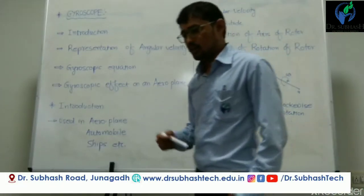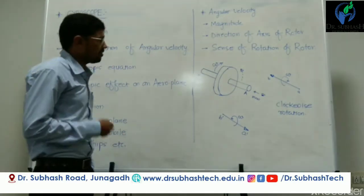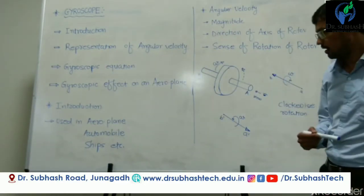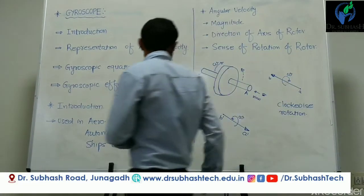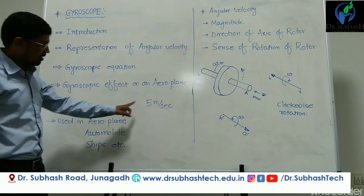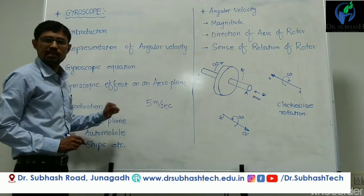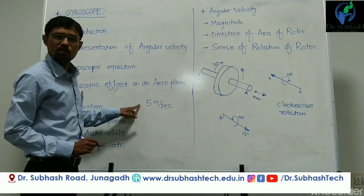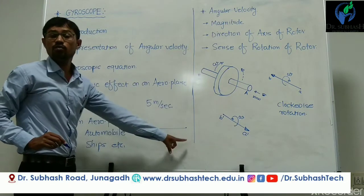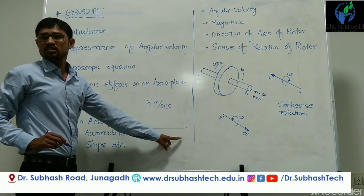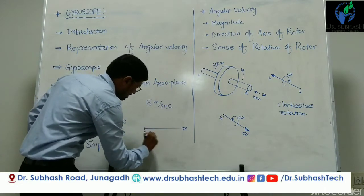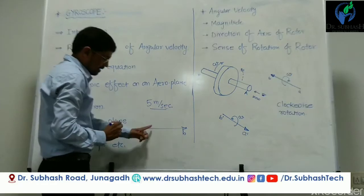We already know that we can represent linear velocity by a vector. If we want to represent a linear velocity of 5 metres per second, we can represent this using a scale — suppose 1 centimetre equals 1 metre per second — then we draw a line of 5 centimetre length. This is the magnitude of velocity, and another thing is the direction. So we know that our velocity is towards the right direction, and we represent this 5 metres per second velocity as a vector.